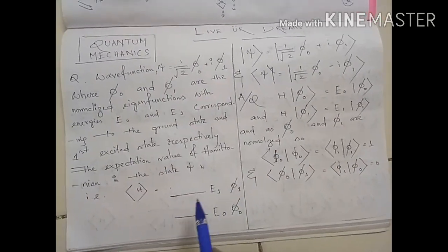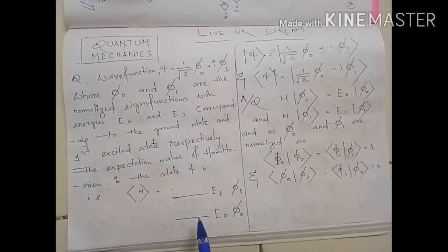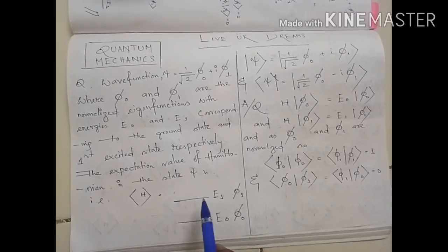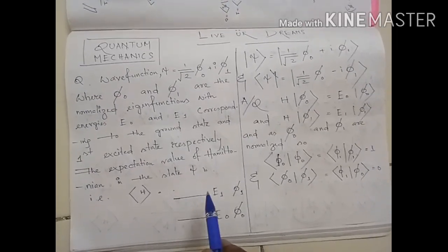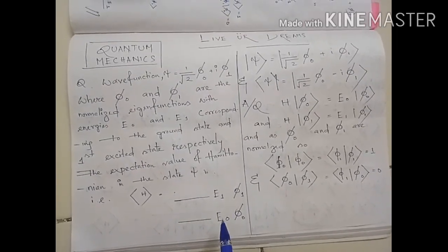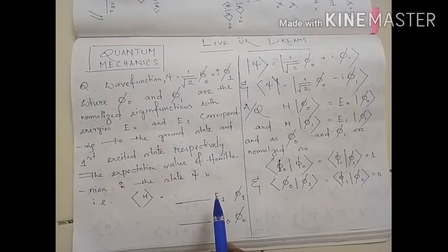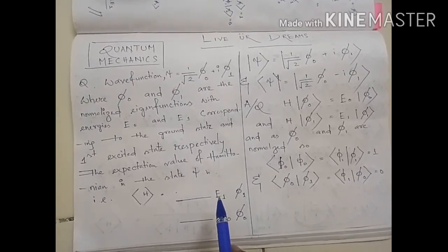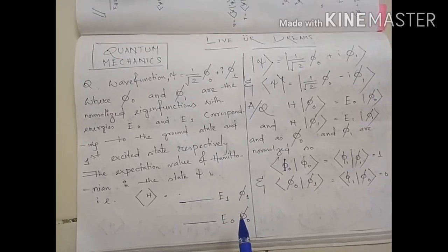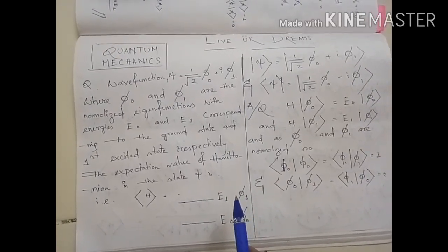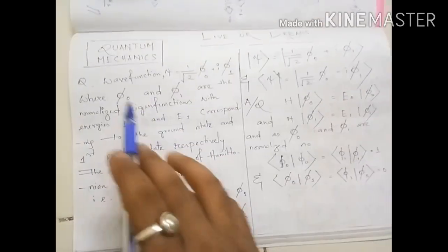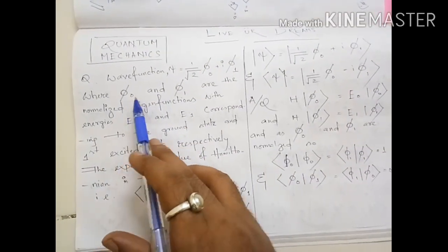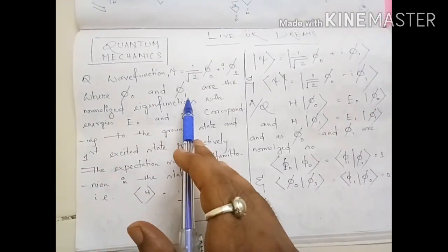Here you can see this is the ground state and this is the first excited state. The ground state energy is E₀ and E₁ is the energy of the first excited state. φ₀ and φ₁ are the eigenstates of the ground state and first excited state.